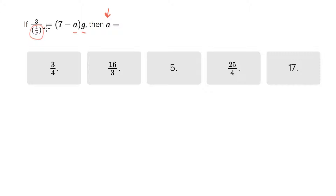So the way that you neutralize a fraction denominator is you invert that fraction and move it up to the numerator. So 3 over 4 over G is equal to 3 times G over 4, that equals 7 minus A times G.